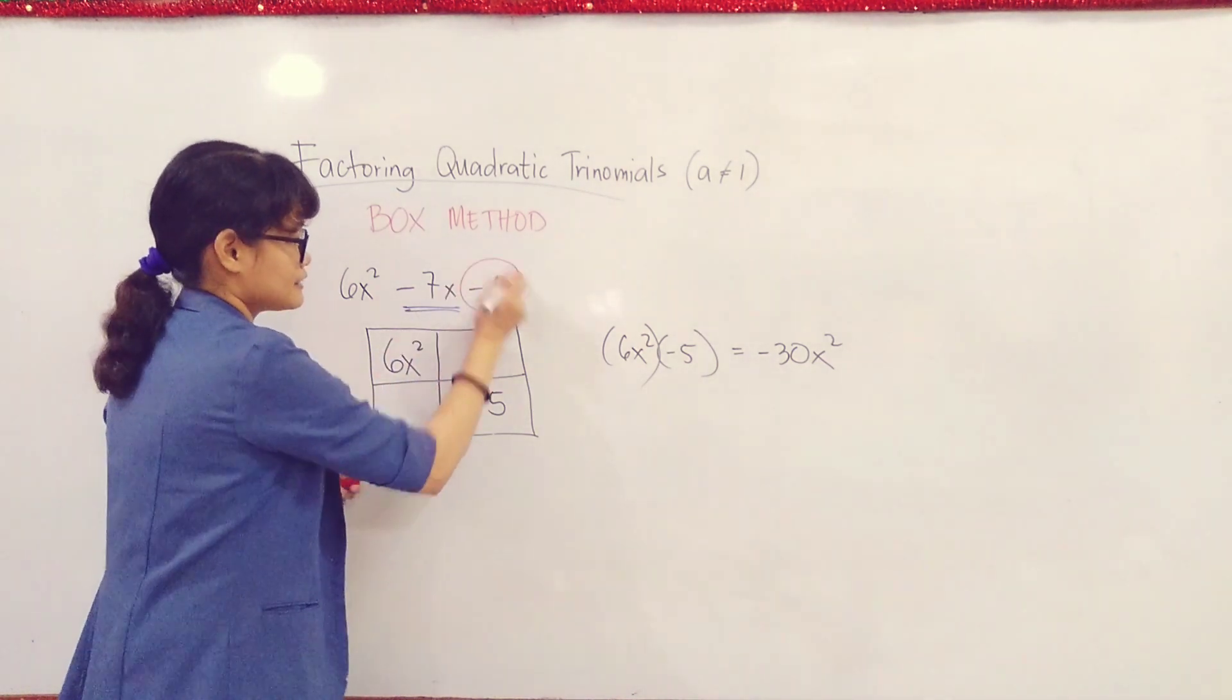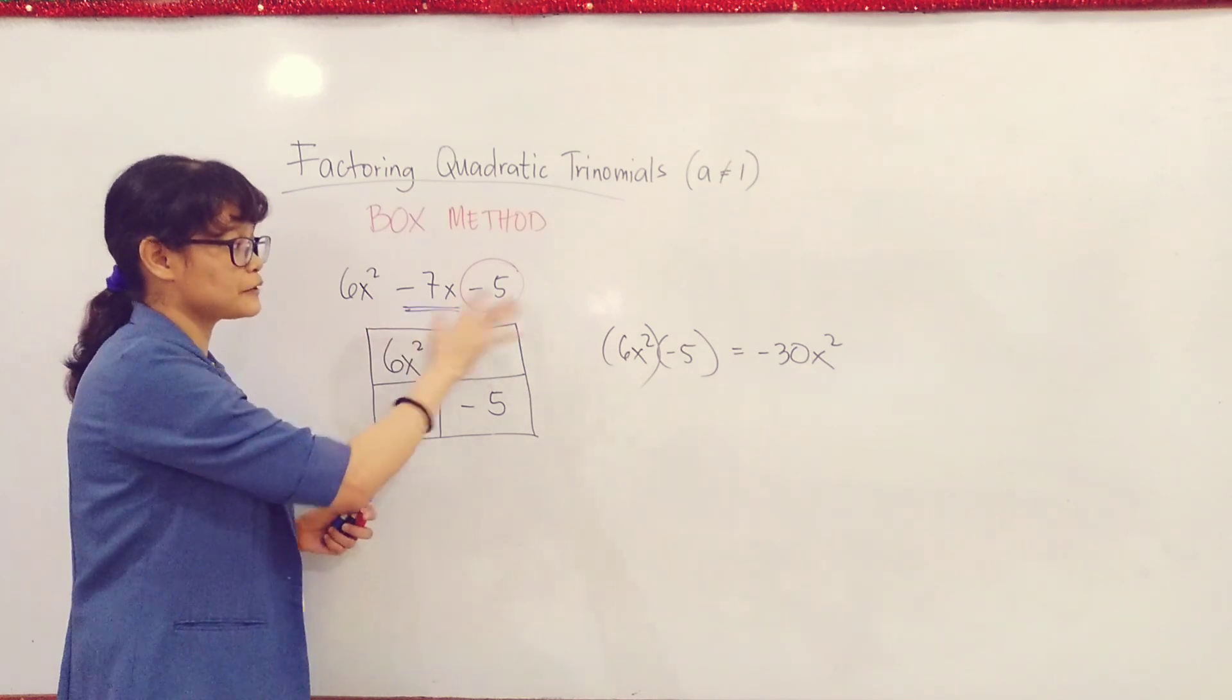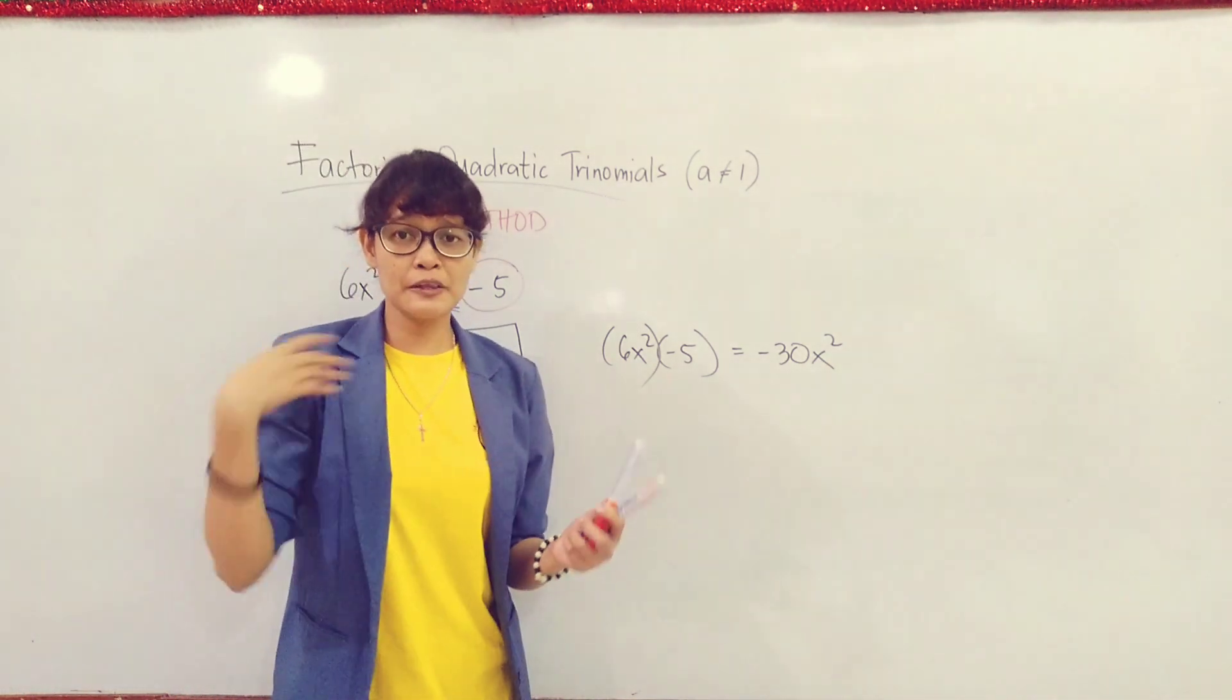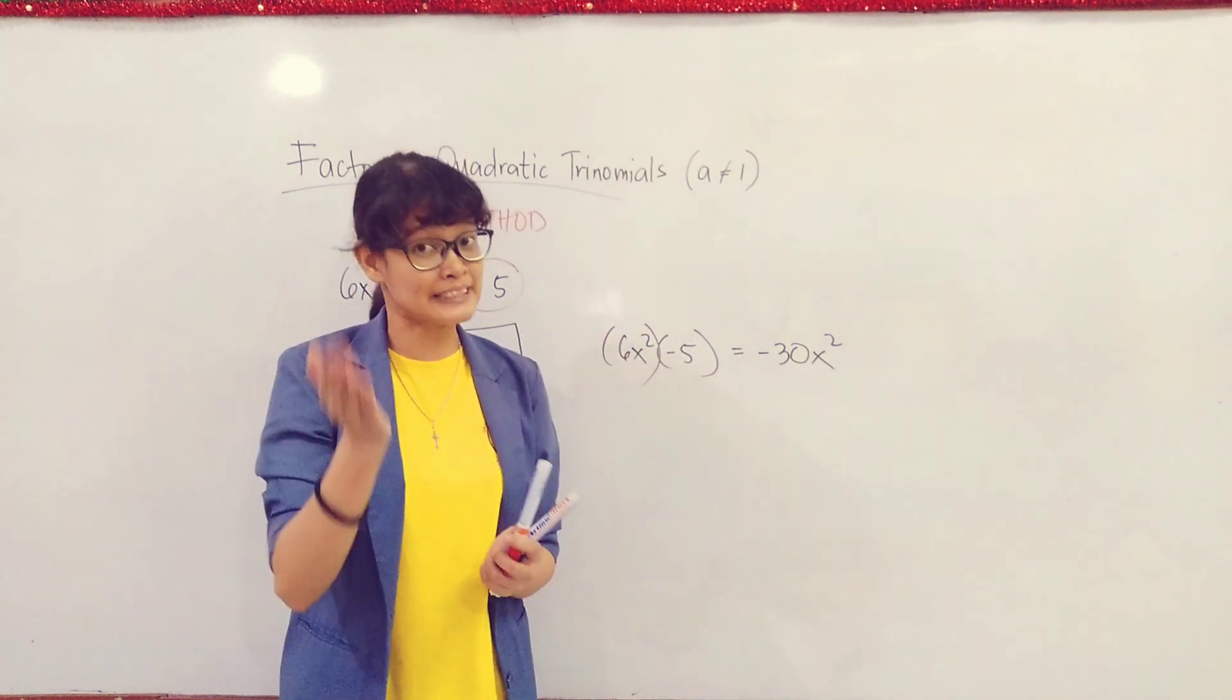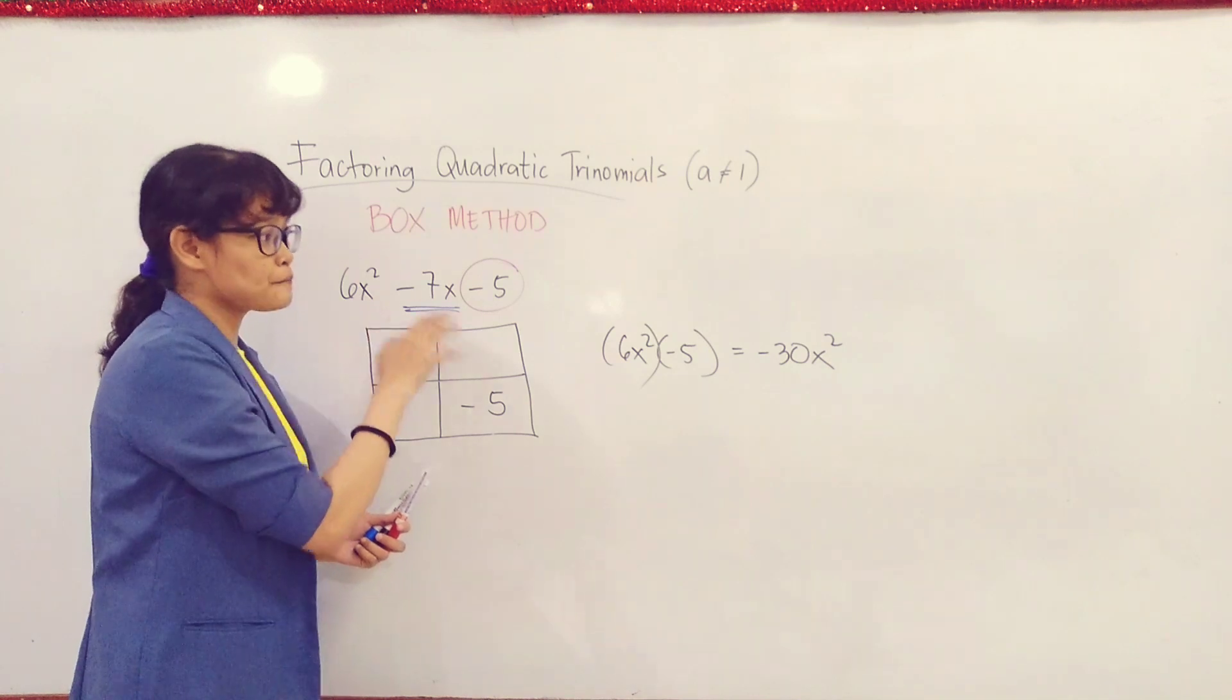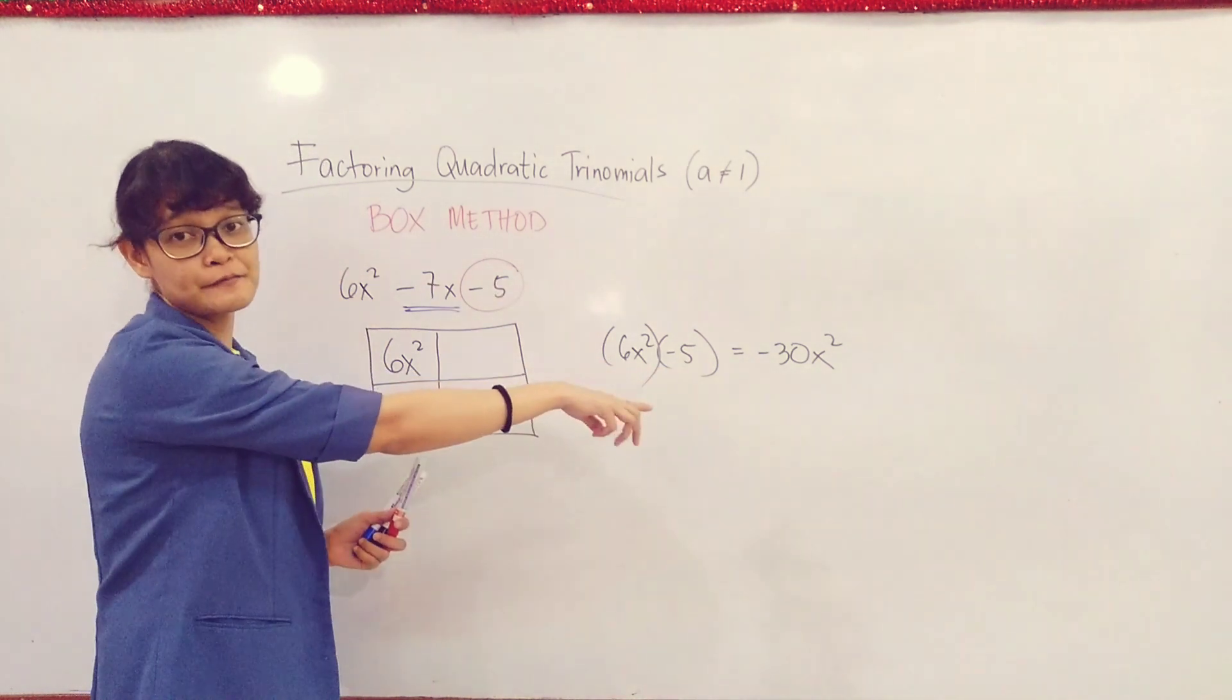Now, since we're dealing with negatives here, look at the last term. The last term is a negative number. So this implies that the factors of this quadratic trinomial will have different signs - one positive and one negative. Now, the next question is: which one should be negative and which one should be positive? The answer is very simple. You just look at the middle term. If the middle term is negative, it means the higher factor should have the negative sign.